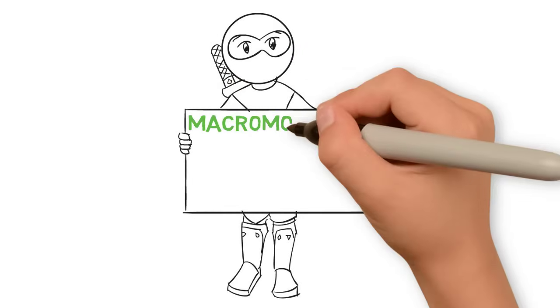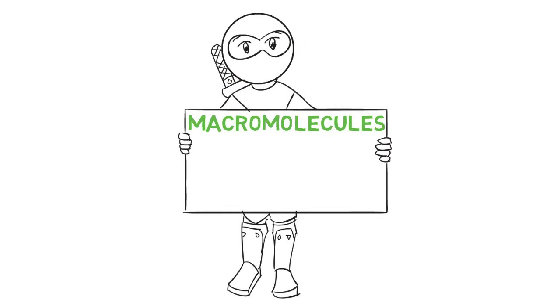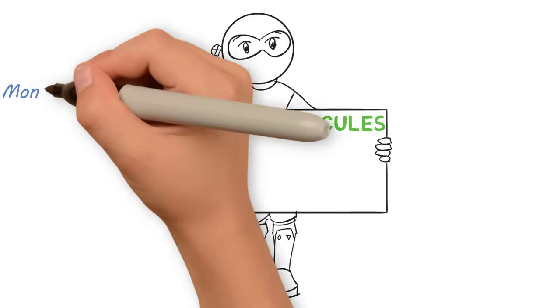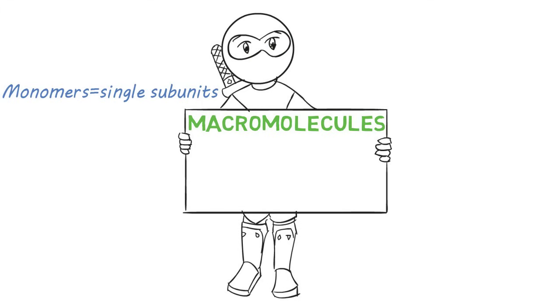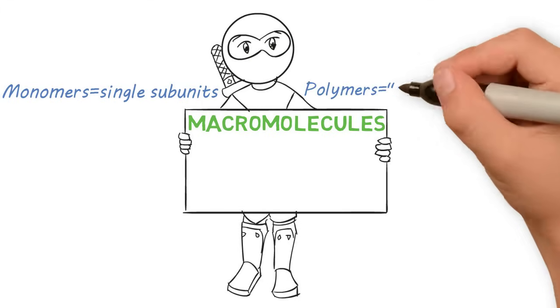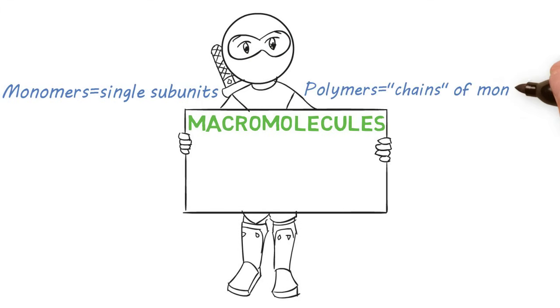Today we're going to talk about macromolecules. Macromolecules are large structures that make up all living organisms. All macromolecules have small subunits called monomers, which bind together to form larger units called polymers.